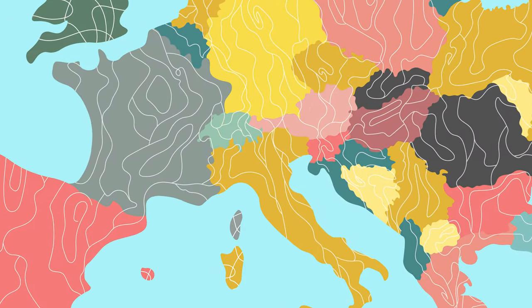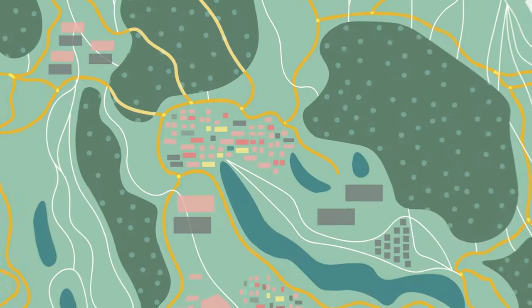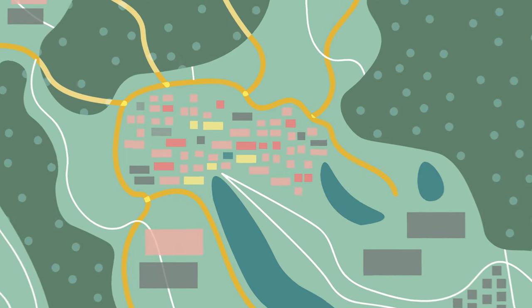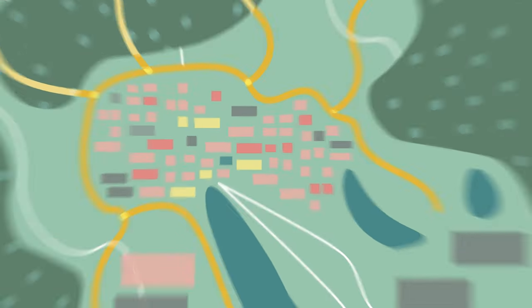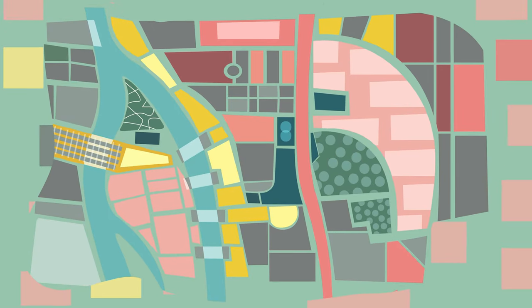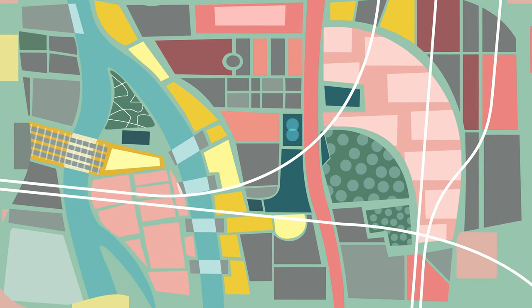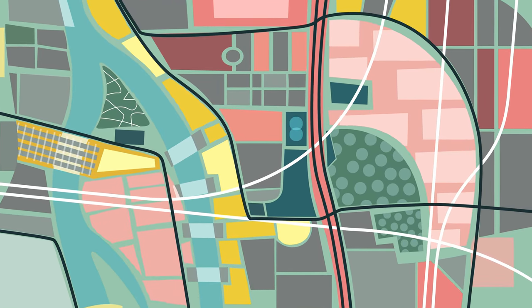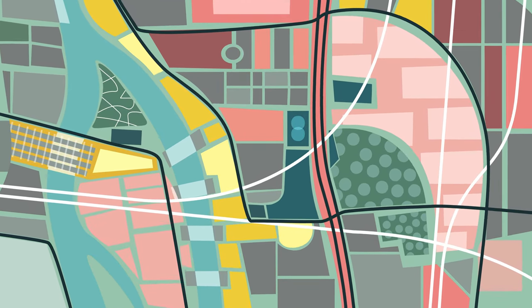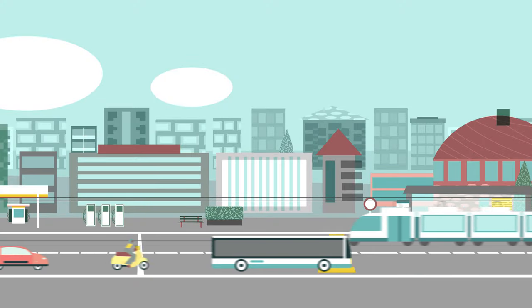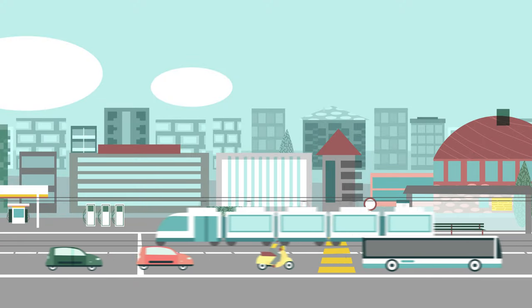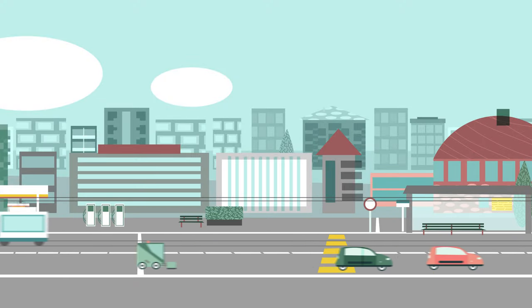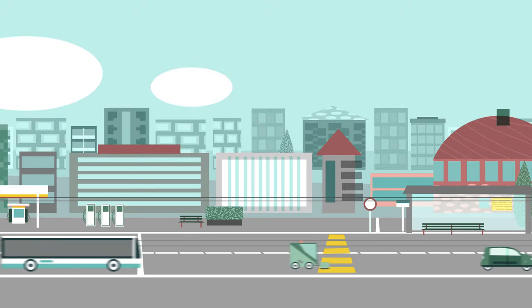One of the great challenges in engineering today is dealing with the complexity of the systems we design. Imagine the task of optimizing the transportation network of a city. Should we invest in a subway network? Tram lines? Should we subsidize ride-sharing services? How to build roads that serve cars but are also safe for pedestrians and cyclists?